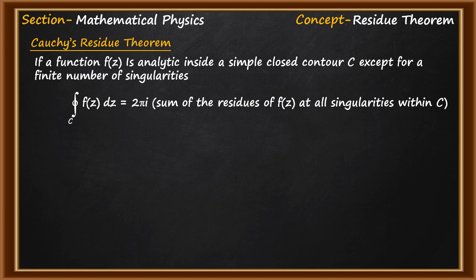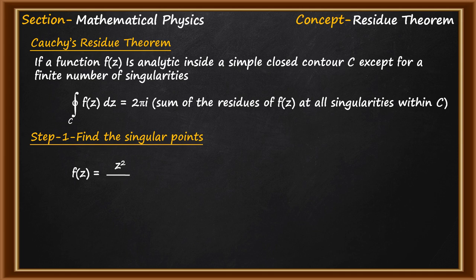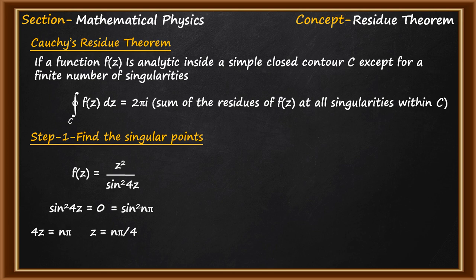To calculate the value of the contour integral, the first step is to find out the singular points of the function. The given function is f(z) = z²/sin²(4z). Singular points are those points at which the function fails to be analytic — in simple terms, where the function goes to infinity. So z²/sin²(4z) goes to infinity when sin²(4z) = 0, which equals sin²(nπ). That means 4z = nπ, so z = nπ/4 for n = 0, ±1, ±2, and so on.